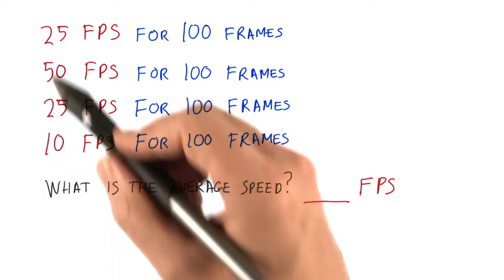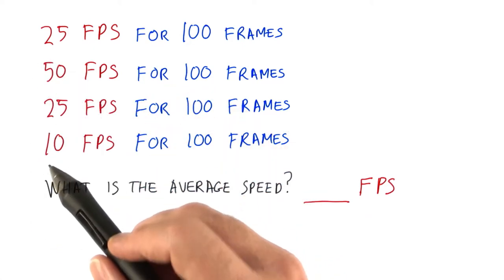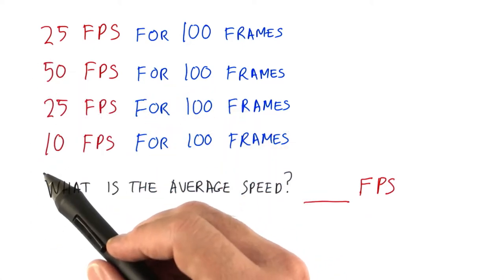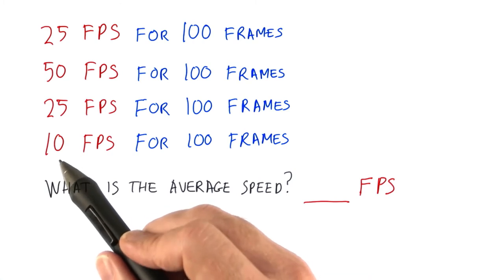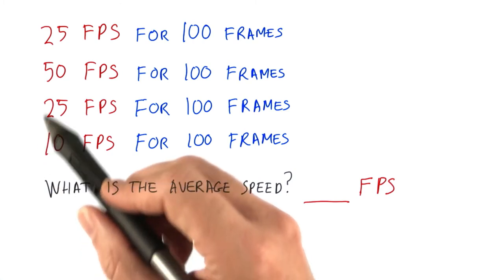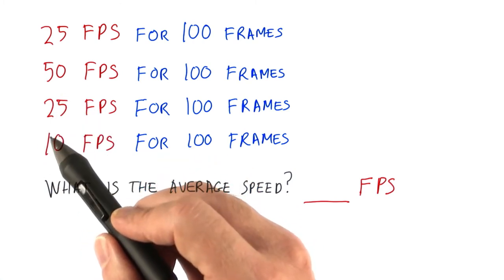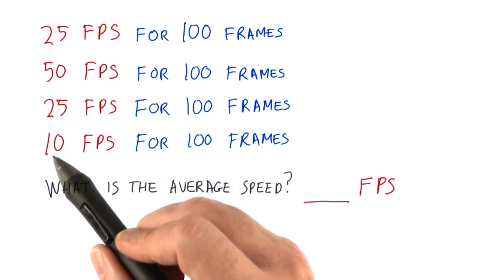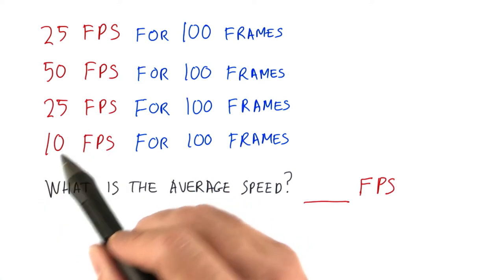Usually we just add numbers up and take the average. This doesn't work with frames per second, and that's the problem with them. If you add the four values together and divide by 4, you get 27.5 frames per second. That's not correct, however.